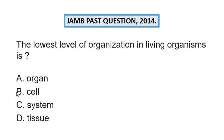The correct answer is cell. In living organisms we have four levels of organization — four hierarchy. The first one is the cell, which is the lowest. The second one is the tissue; aggregation of cells will form tissues. The third one is the organ; aggregation of tissues will form organs. And the last one is the system; aggregation of organs will form the system.